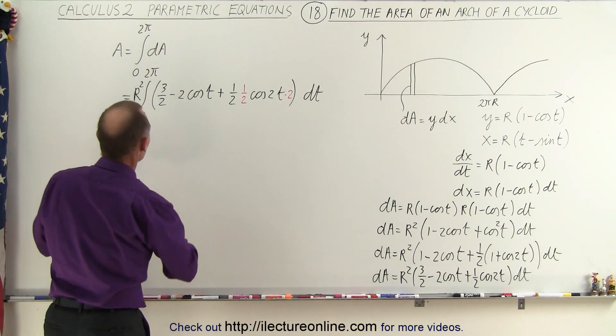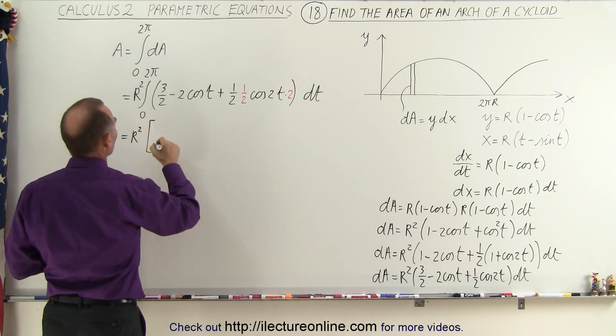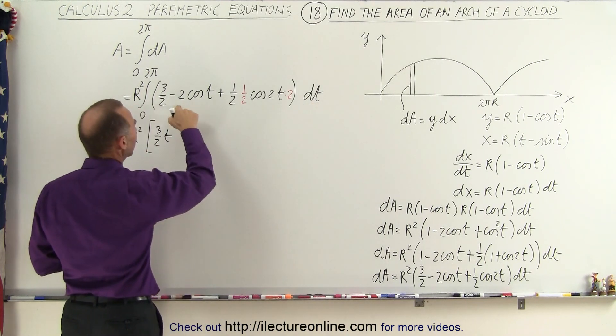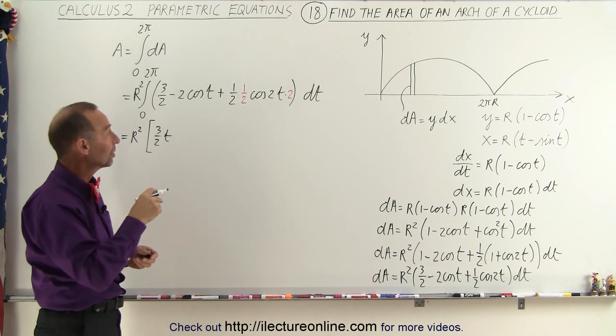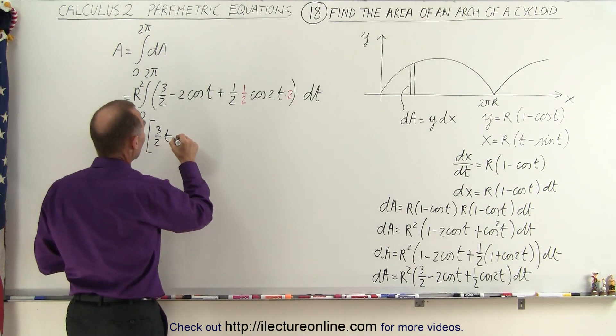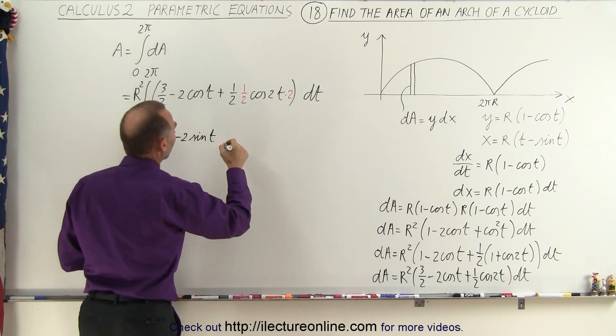Now we're ready to integrate. This becomes equal to r squared times 3 over 2 times t, because it's in terms of dt here, and here the integral of cosine would be the sine because the derivative of the sine is the cosine. The integral of cosine is the sine, so we still have a minus 2 times the sine of t.